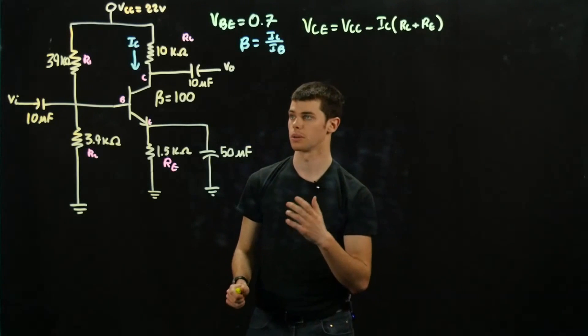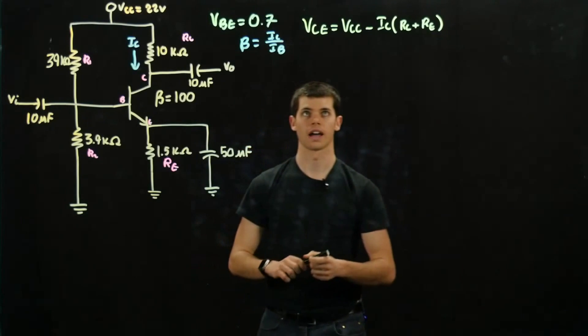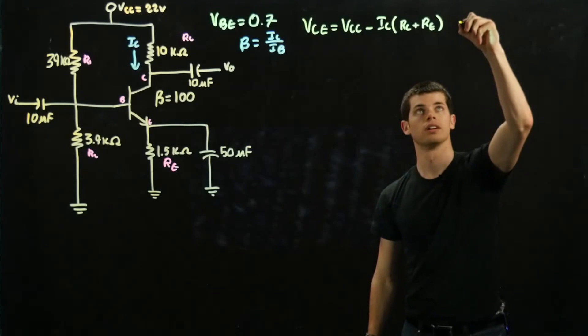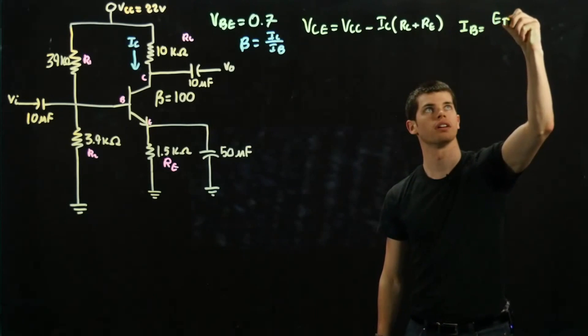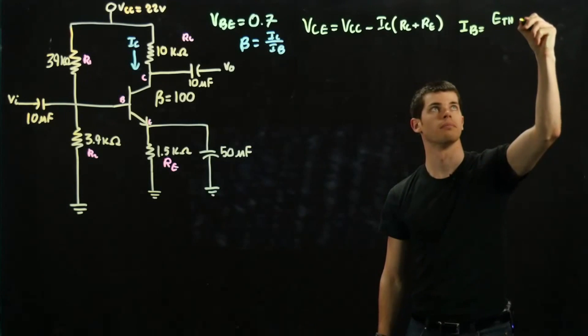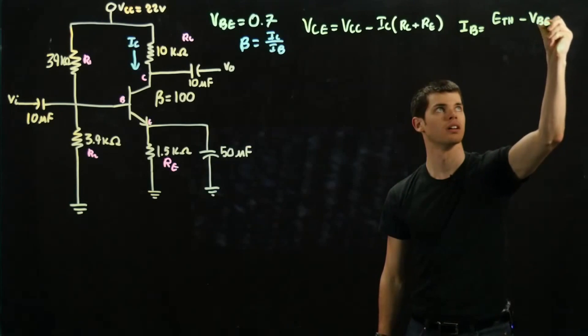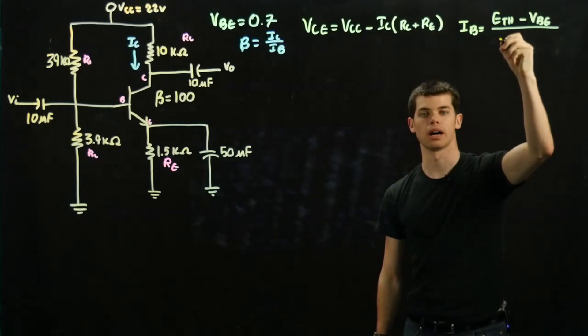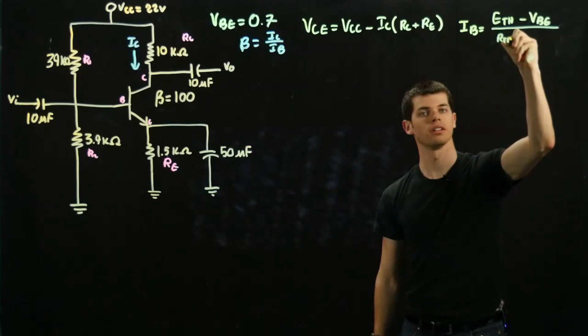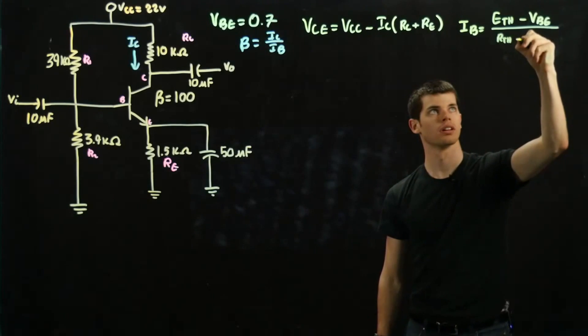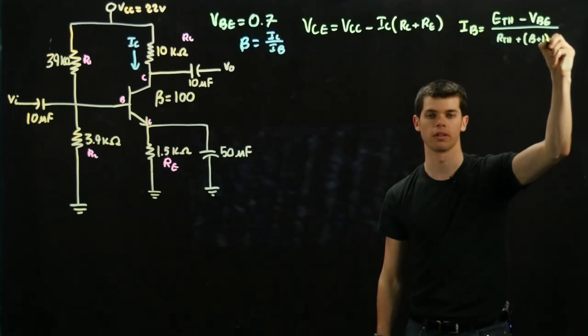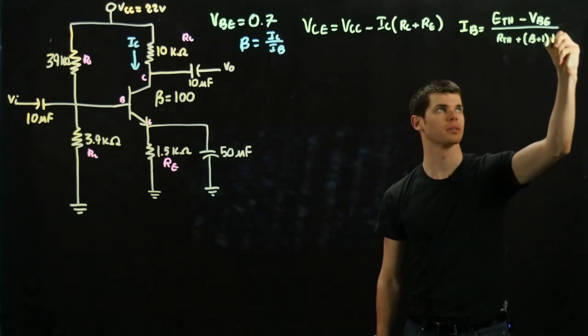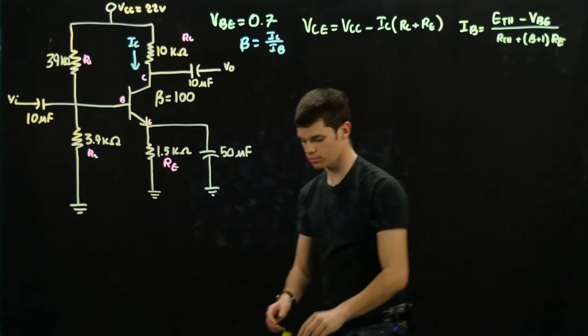And the significance of this is this is going to allow us to solve for IB. And the formula for this, IB is equal to E-thevenin minus VBE divided by R-thevenin plus beta plus 1. That was that one I was talking about before. And we're going to multiply it by RE.